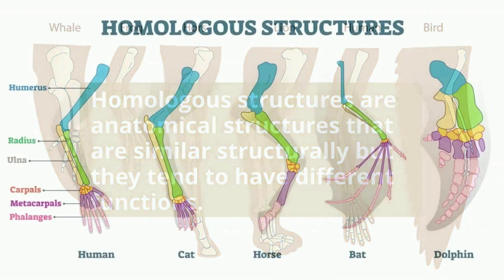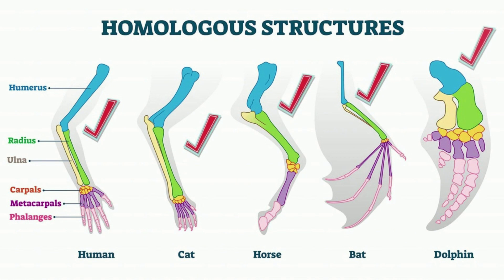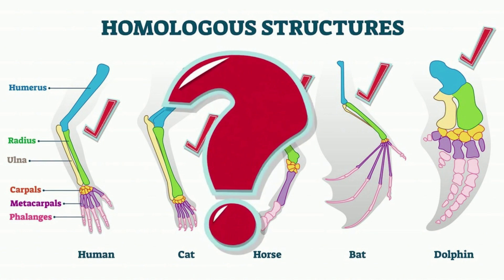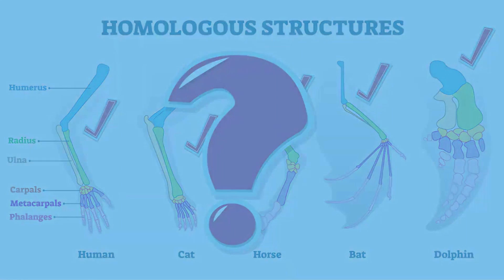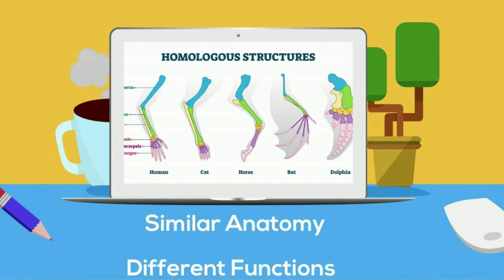Take a look at the arm of a human, the leg of a cat, the leg of a horse, the wing of a bat, and the flipper of a dolphin. In this group you have different species but the anatomical structures look similar. Why would the bones in a dolphin's flipper be similar to what you use to grasp objects? These are homologous structures — similar anatomy, different functions.